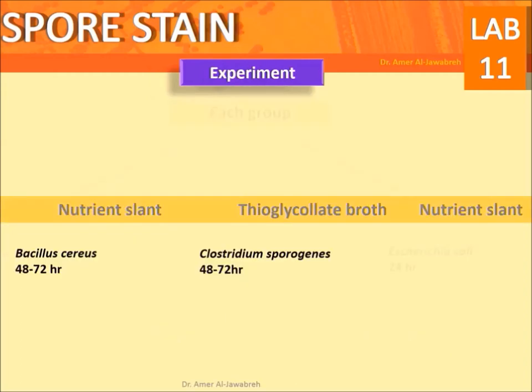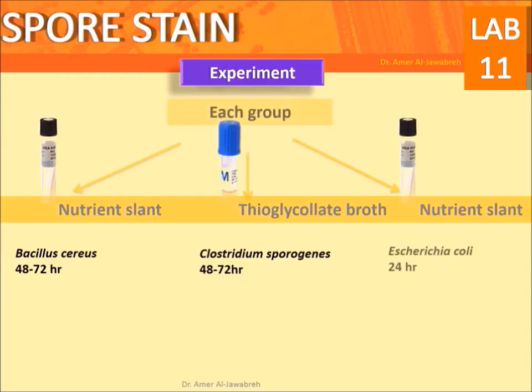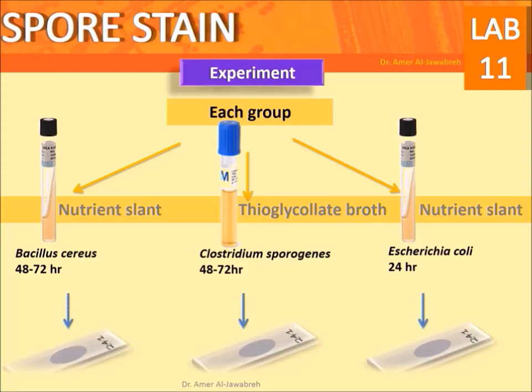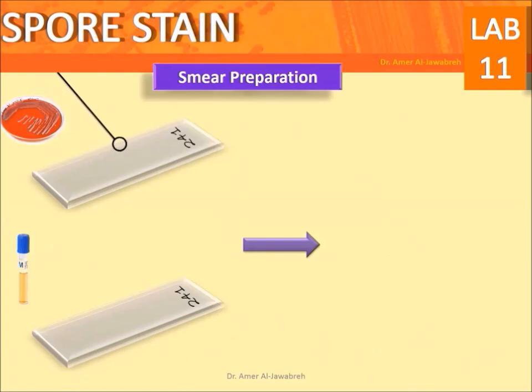For each group, provide: nutrient agar with Bacillus cereus, thioglycollate broth with Clostridium sporogenes, and a nutrient slant or nutrient agar plate with Escherichia coli. Prepare smears from each medium.